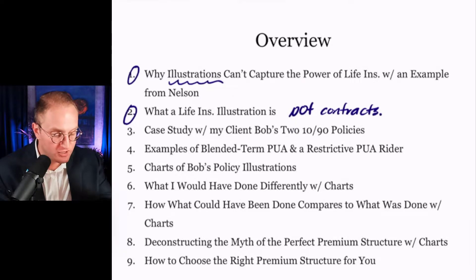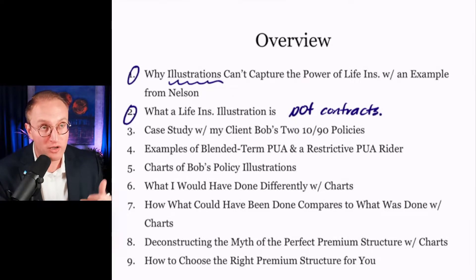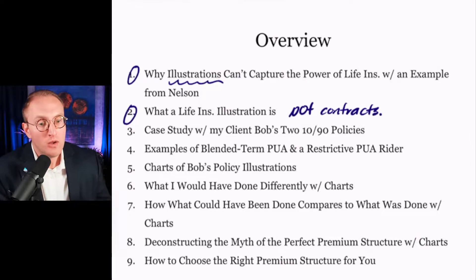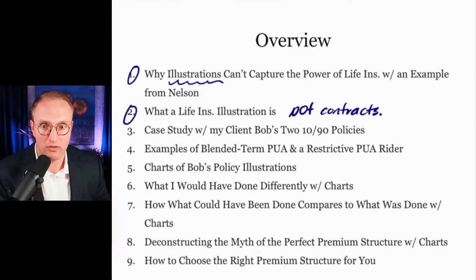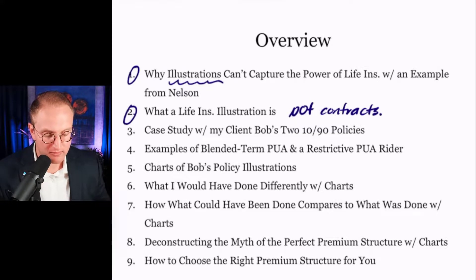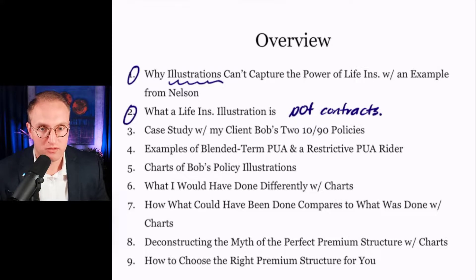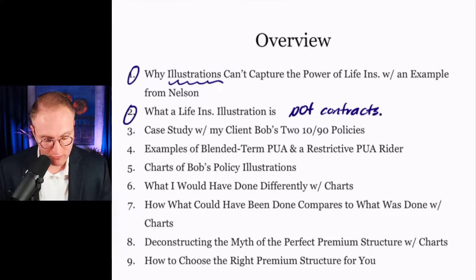Just because cash value illustrated out in year one, five, ten, or twenty is what it is — well, what are the terms and conditions governing the PUA rider that ostensibly contribute to that cash value growth? That has to be covered first. So we'll try to dissect what an illustration really is before we get into these examples.